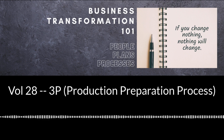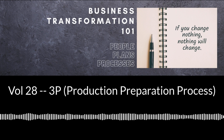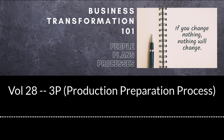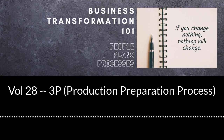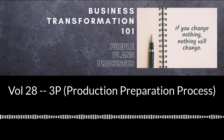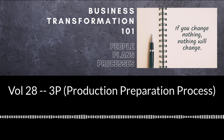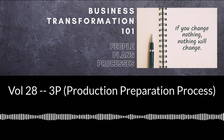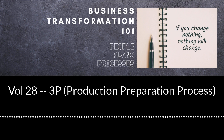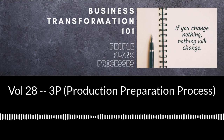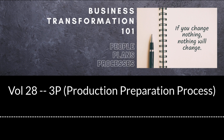The 3P team members link the process hardware — such as fixtures, materials, equipment, tooling, and tools — to the process software, consisting of material flow, information flow, standard work, and inspection, to provide an effective production system.